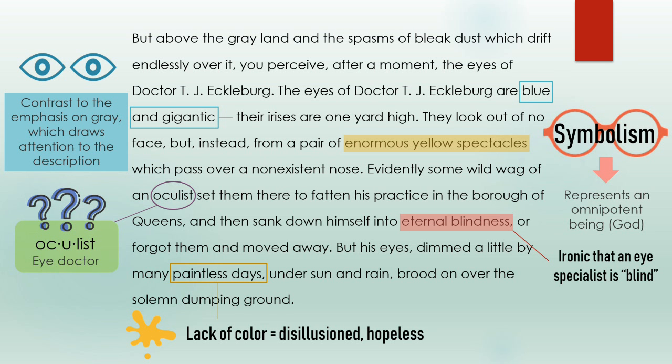And there we have it — a major theme. This book takes place in the 1920s, right after World War I, and this passage really captures the essence of the moral decay that was happening at the time. After seeing so much destruction, writers such as F. Scott Fitzgerald, who were called the Lost Generation, wrote about their own disillusionment with the world. This Valley of Ashes is a place devoid of hope — a place where even eye doctors become blind, and a divine being sees all of this decay but won't do anything to stop it.